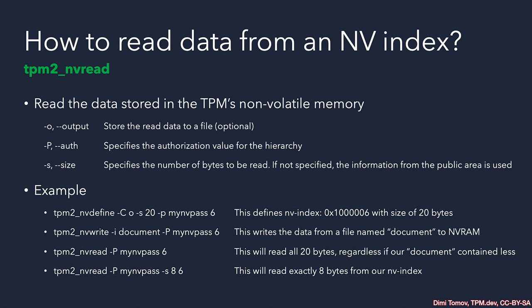Once we have written our data to the NV RAM, we want to read it out to confirm a successful write and verify the result. This can be performed with another TPM2 tool, and it is important to provide the correct authorization — the right hierarchy, the right hierarchy authorization, and the size in bytes to read. If we do not specify the number of bytes, we receive the complete size of the NV index. For example, with a 20-byte NV index where only 8 bytes were stored, we will receive the original 8 bytes followed by 12 bytes of undefined data, which could be zeros or anything.